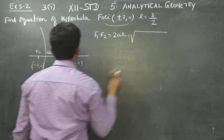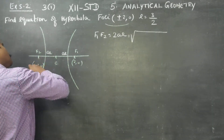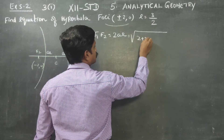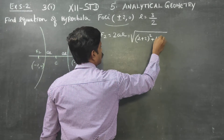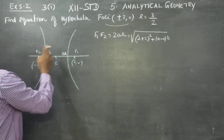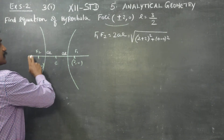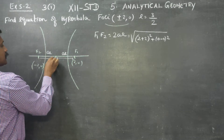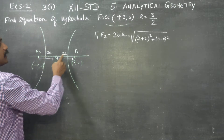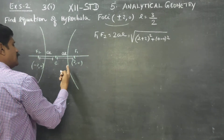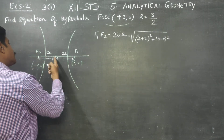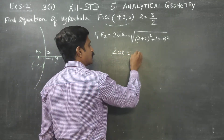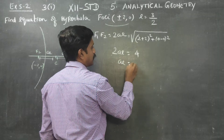Using the distance formula: F1 to F2 distance equals the square root of (x2 minus x1) squared plus (y2 minus y1) squared. Applying this gives a distance of 4 units. Therefore, 2ae equals 4, so ae equals 2.